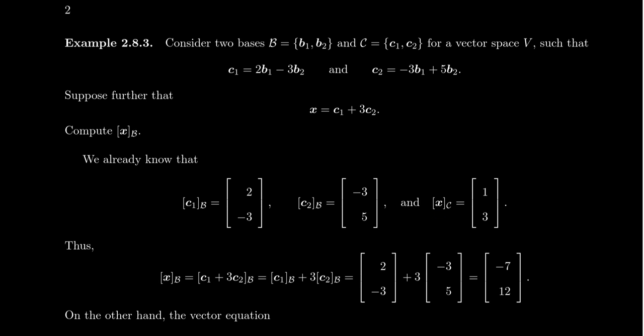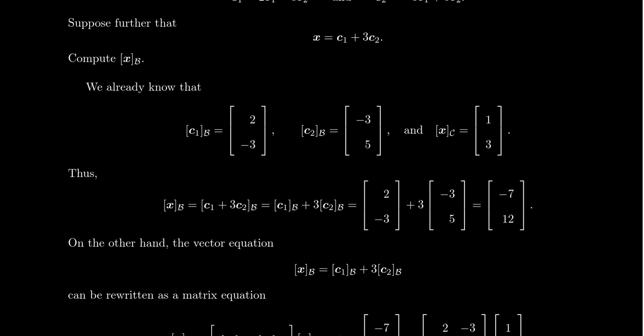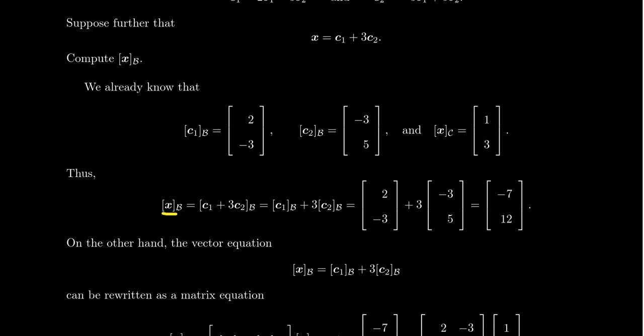So because we have these two different bases and a coordinate vector for X relative to C, we don't actually know what X is specifically since we don't know what the Bs and Cs are. But we do have enough information to determine what the B coordinate vector of X would be. If we look at the coordinate vector for X relative to B, since X can be written as a combination of the Cs, we can make a substitution: the coordinate vector of X equals the coordinate vector of C1 plus 3C2 relative to B. As mentioned in the previous video, the coordinate map is a linear map — linear combinations are preserved by the coordinate map.